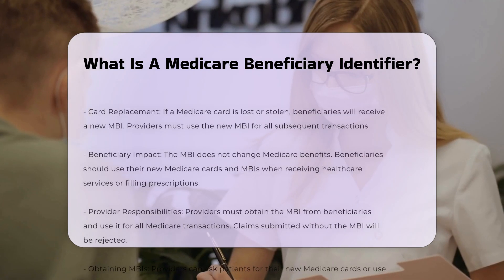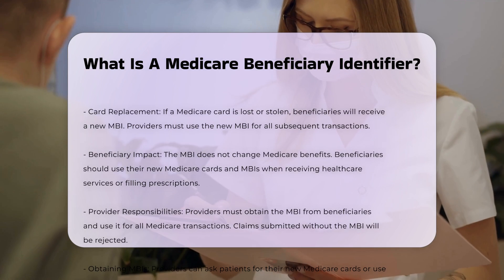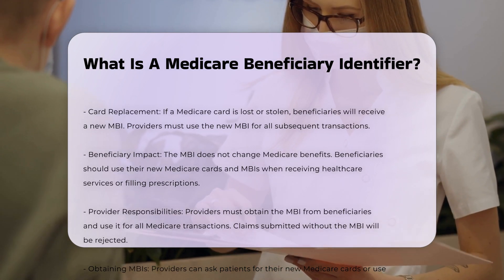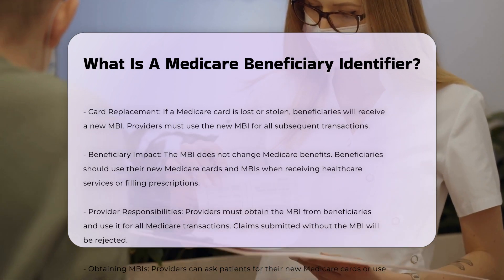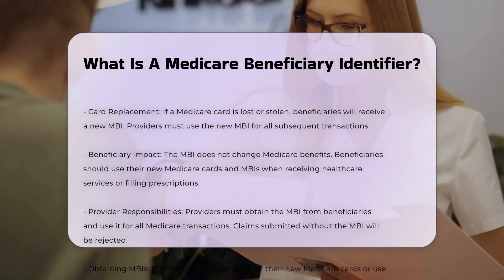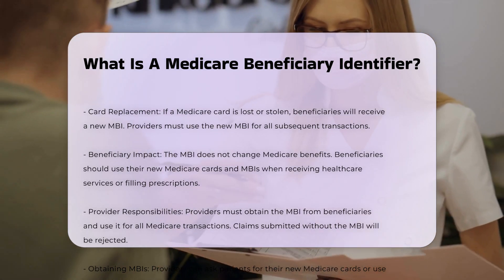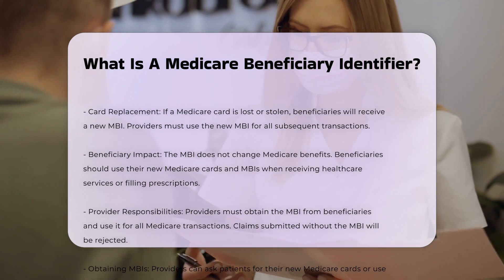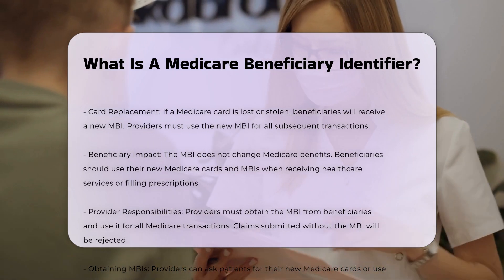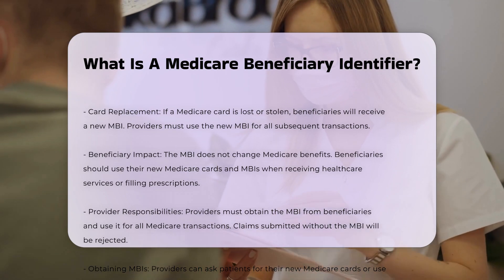Exceptions: There are limited exceptions where the HICN can still be used, such as for appeals, certain system adjustments, and retrospective reporting. Card Replacement: If a Medicare card is lost or stolen, beneficiaries will receive a new MBI. Providers must use the new MBI for all subsequent transactions.